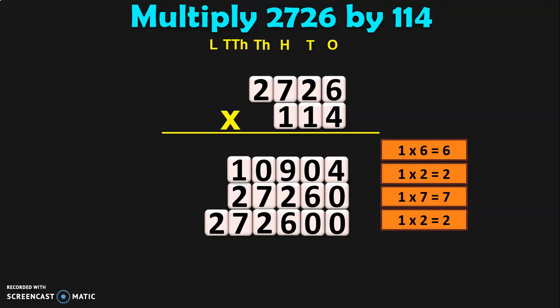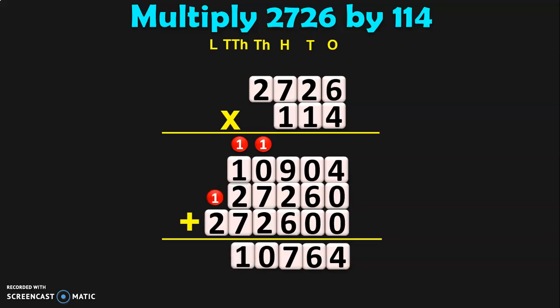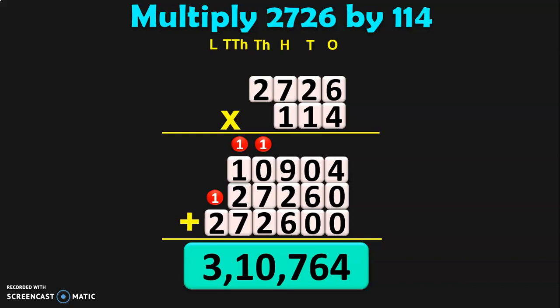Once you find out the 3 products, we will have to add all 3 products. Begin the addition from the 1s place: 4 plus 0 plus 0 is 4. Next, 0 plus 6 plus 0 is 6. Next, 9 plus 2 is 11, 11 plus 6 is 17 — so 7, carry over 1. 1 plus 0 is 1, 1 plus 7 is 8, 8 plus 2 is 10 — 0, carry over 1. 1 plus 1 is 2, 2 plus 2 is 4, 4 plus 7 is 11 — 1, carry over 1. And then 1 plus 2 is 3. So the answer is 3,10,764 when you multiply 2,726 by 140.